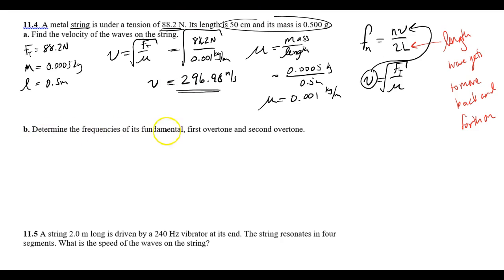Then it says, determine the frequencies of its fundamental. Fundamental is the very first possible, the lowest. The first overtone is what we call the second harmonic, because it's the first one over the fundamental. And then the second overtone is what we call the third harmonic. For this first problem, I'll take a little more time. The very fundamental frequency we would have on this length of the string would look like that. Number two would look like this as a standing wave. And then number three would look like that.